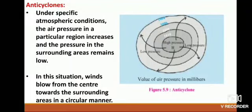Anti-cyclones. Under specific atmospheric conditions, the air pressure in a particular region increases while the pressure in the surrounding areas remains low. In this situation, winds blow from the center towards the surrounding areas in a circular manner. In the northern hemisphere, these winds blow in a clockwise direction, whereas in the southern hemisphere they blow in an anticlockwise direction. During anti-cyclones, the skies are clear and winds blow with lesser velocities, making the weather pleasant.